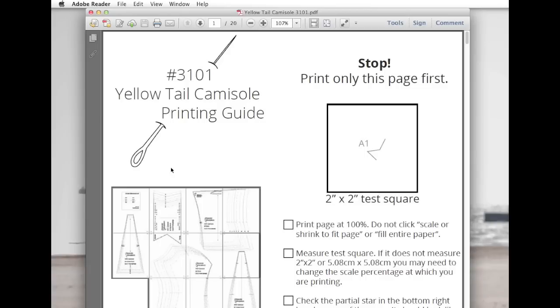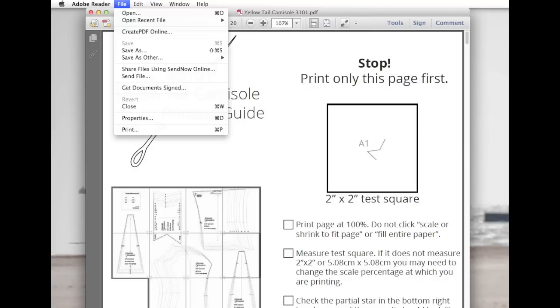So once you get that opened up, go to File up in the menu bar, then click on Print.